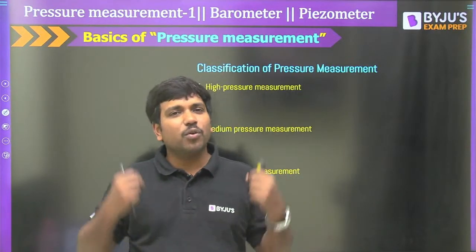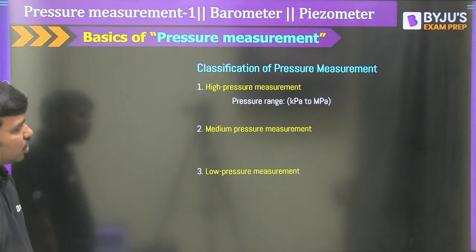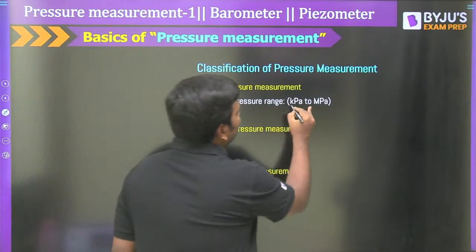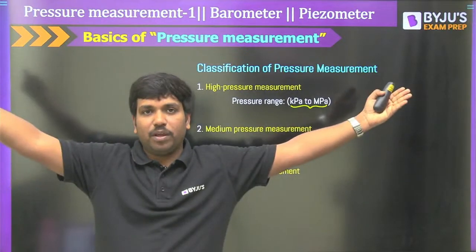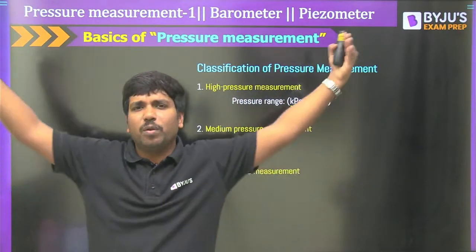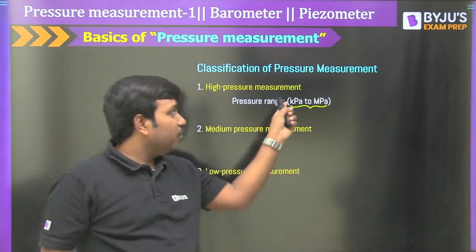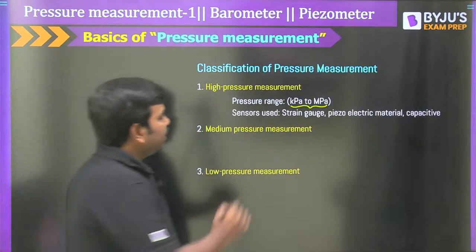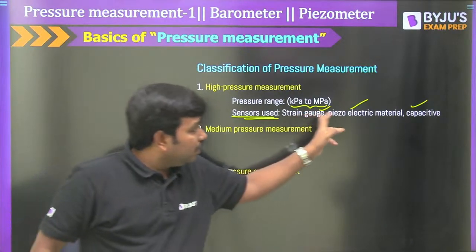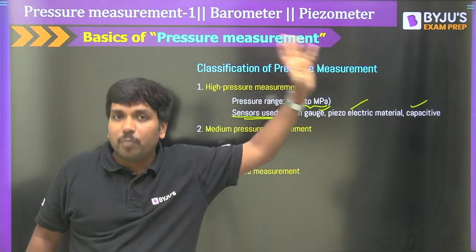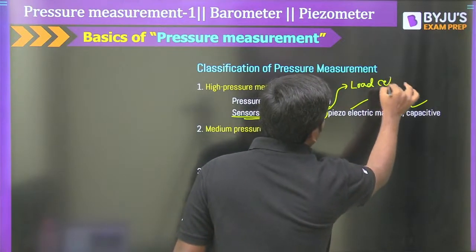High pressure measurement is in the order of kilopascals to megapascals. For high pressure — for example measuring the weight of a tree on the floor — we use sensors like strain gauge, piezoelectric material, and capacitive techniques. Load cells made from strain gauges are specially used to measure high amounts of pressure. If you refer to previous year GATE questions on strain gauges, measurements of 10 to the power 5 or 10 to the power 6 Pascals are mentioned.